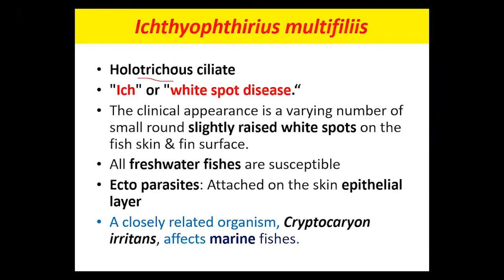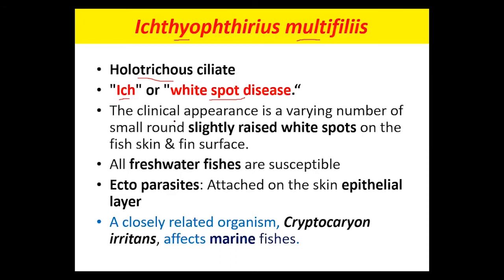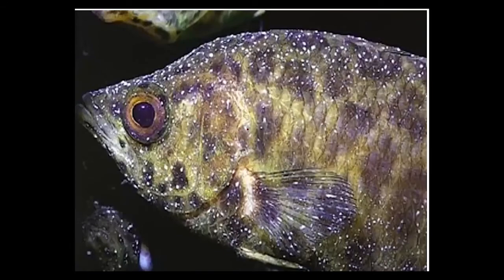The entire surface area is covered with cilia. The scientific name is Ichthyophthirius multifiliis and the common name is 'ich.' They can cause the disease known as white spot disease. The clinical appearance is a varying number of small, round, slightly raised white spots on the fish skin and fins.